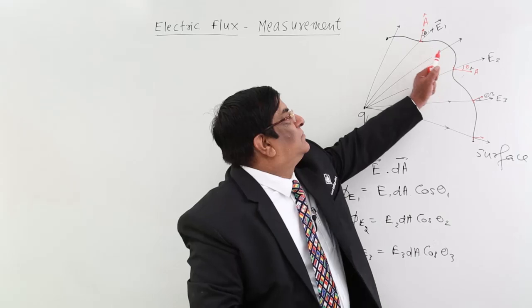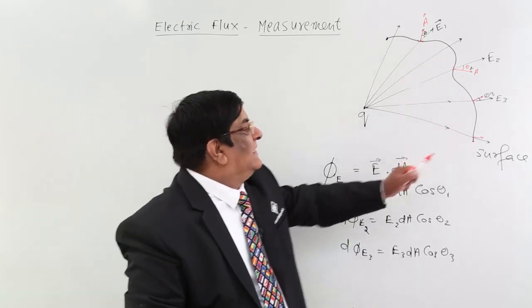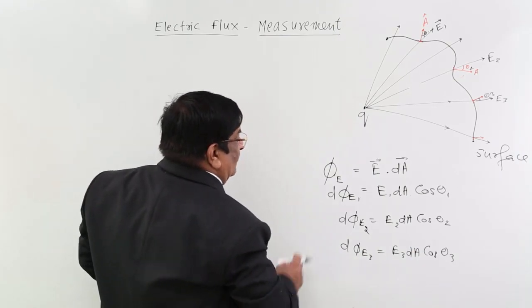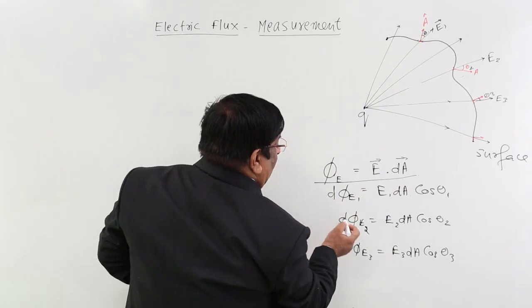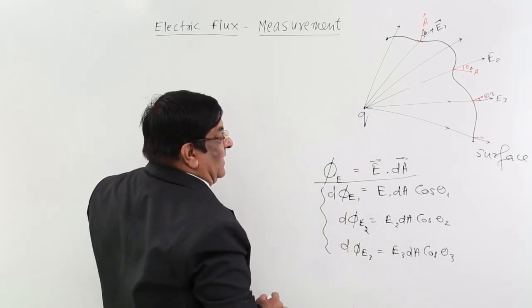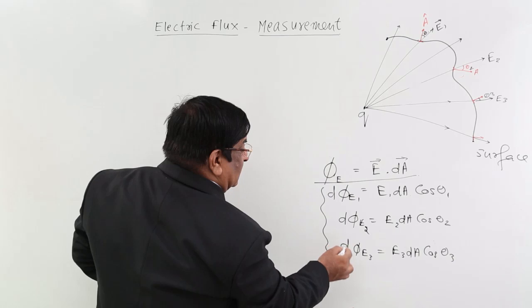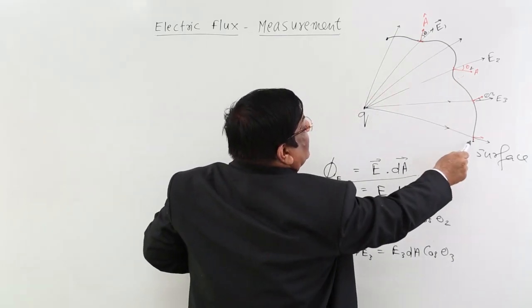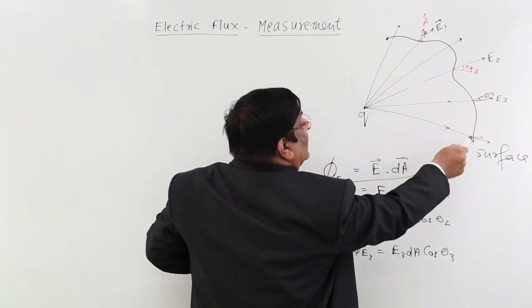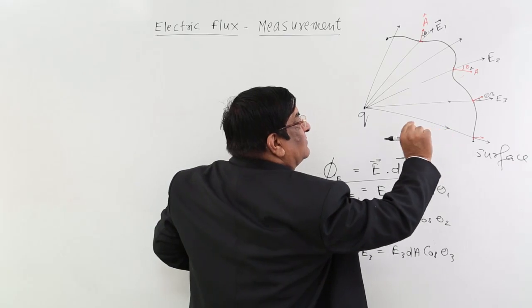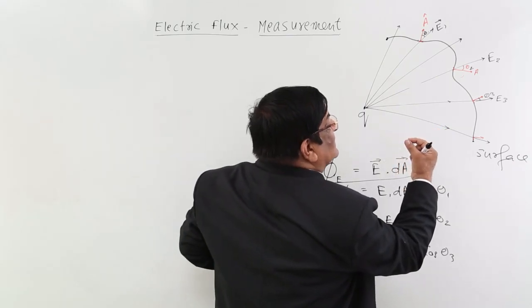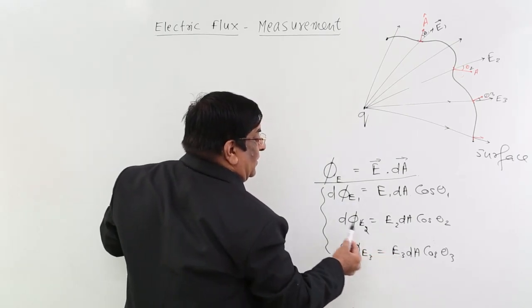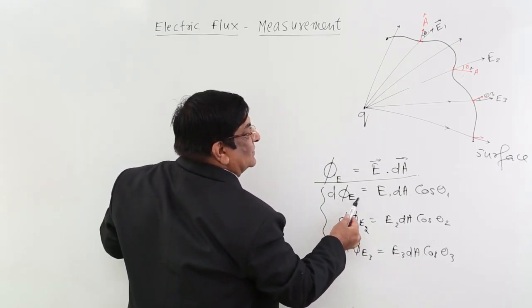And then what is the technique we adopt in calculus? That says the total phi will be summation of all these. Now, if it is summation of many dAs, infinite. Why infinite? Because dA we have taken very small, that is, tending towards 0, approaching 0, such a small area we take.